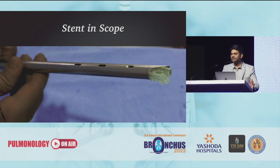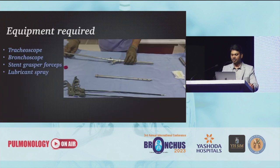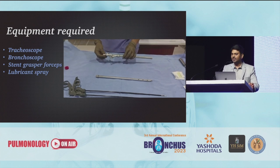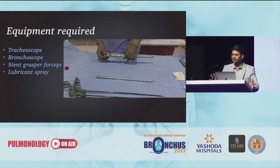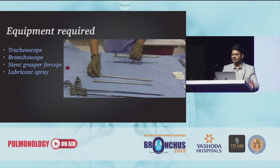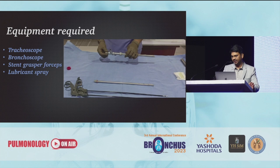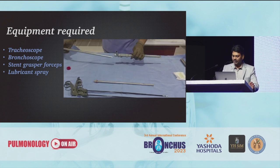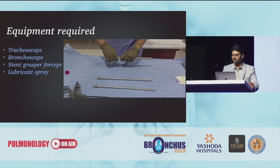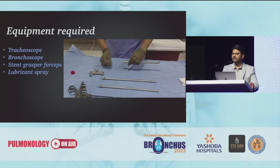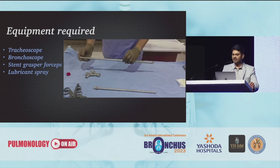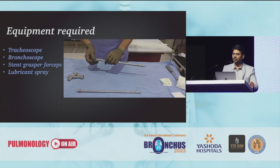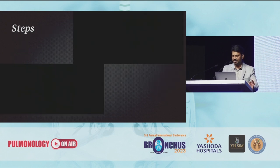Believe it or not, for five years we have not been using any stent applicators for deploying silicone stents. I am going to show you how stents are loaded into rigid bronchoscopes. For stent loading, what we need is one tracheal scope, one bronchoscope, a stent grasper forceps, and a lubricant spray. Here, what I am holding is the tracheal scope. We intubate with the tracheal scope, then load the stent into the bronchoscope, and deploy the stent.